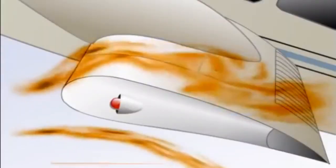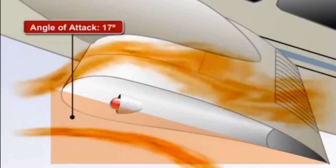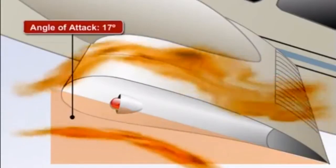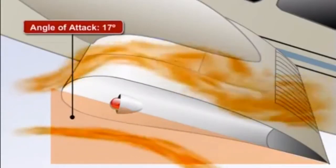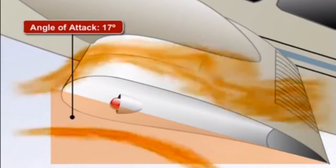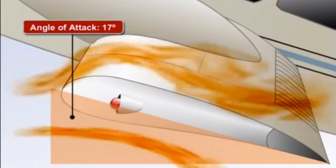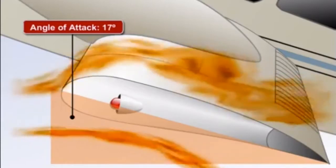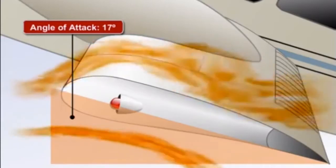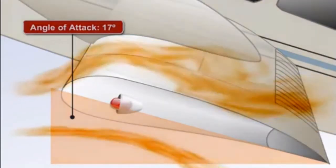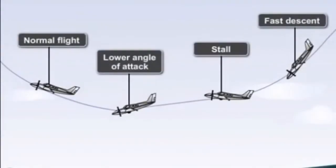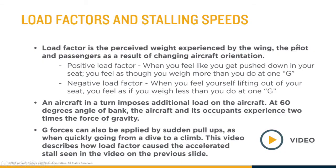Finally, the pilot pulled the yoke back even further and the wing reached the critical angle of attack — a long way above the 1g stalling speed. We call this an accelerated stall. Even though airspeed was high, the wing simply could not produce enough lift to carry all the extra weight from the increased g-loads, resulting in a stalling angle of attack.